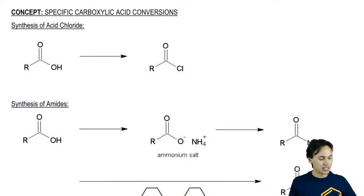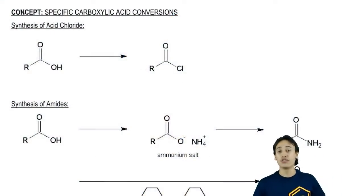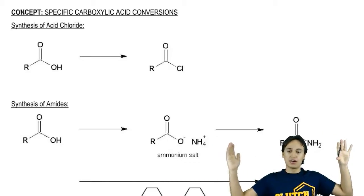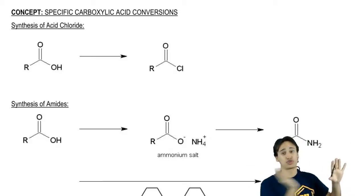The first one is the synthesis of acid chloride. This should be difficult to do because if you remember, acid chloride is the most reactive acyl compound. It's all the way over here. To get carboxylic acid all the way over here, I'm going to need a strong reagent and that's exactly what we're going to use.